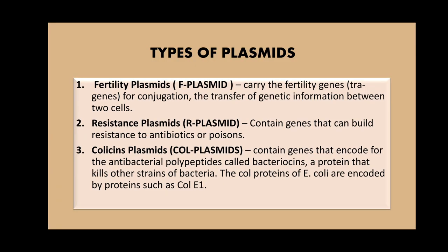On the basis of function, plasmids are of the following types. Fertility plasmids, or F plasmids, carry fertility genes or tra genes for conjugation — the transfer of genetic information between two cells. Resistance plasmids, or R plasmids, contain genes that build resistance to antibiotics or poisons. Col plasmids contain genes encoding antibacterial polypeptides called bacteriocins, a protein that kills other bacteria; the col-proteins of E. coli are encoded by genes such as col-E1.